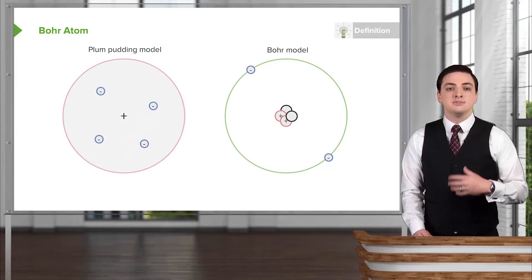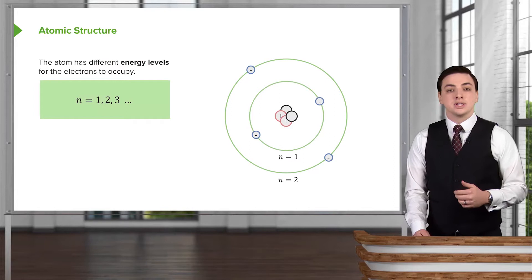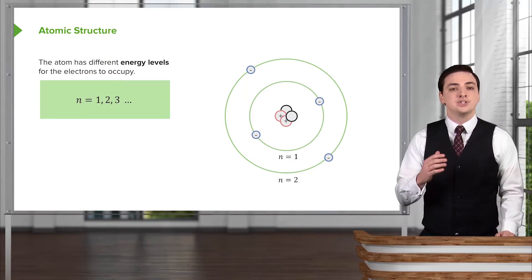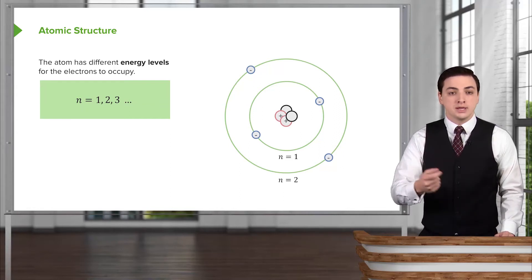So this Bohr atom has a few more properties, namely, and perhaps most importantly, the electronic structure. This electronic structure has different energy levels. These are the places that the electrons are allowed to be orbiting around your nucleus.